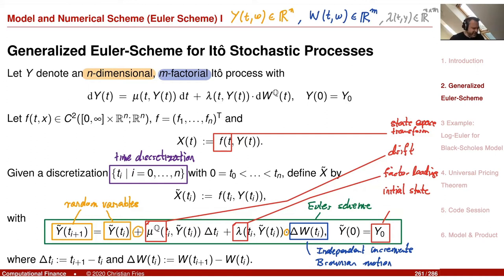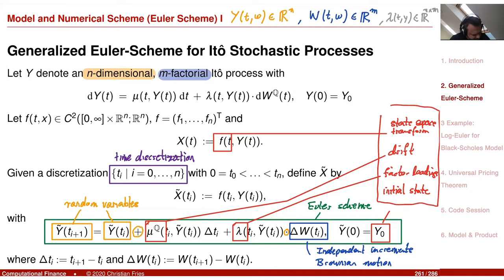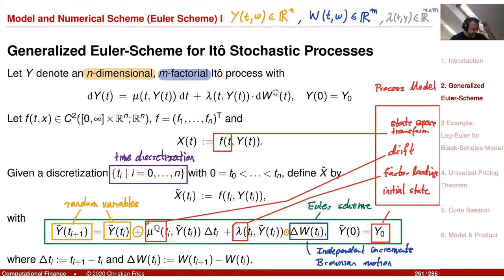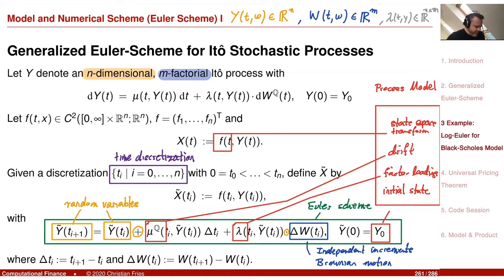We'd like to collect these things — the initial value, drift, factor loadings, and state space transform — in a single object, which we call the process model. It's the model for the stochastic process. We have nice such models for Black-Scholes, Bachelier, Heston, and many others. Let's have a look at an example: the Black-Scholes model.